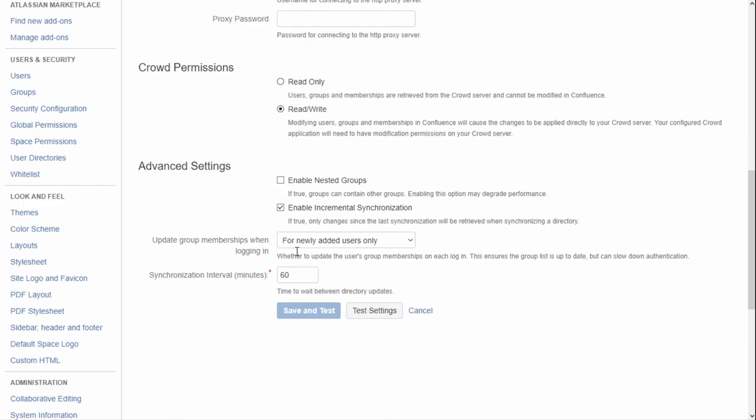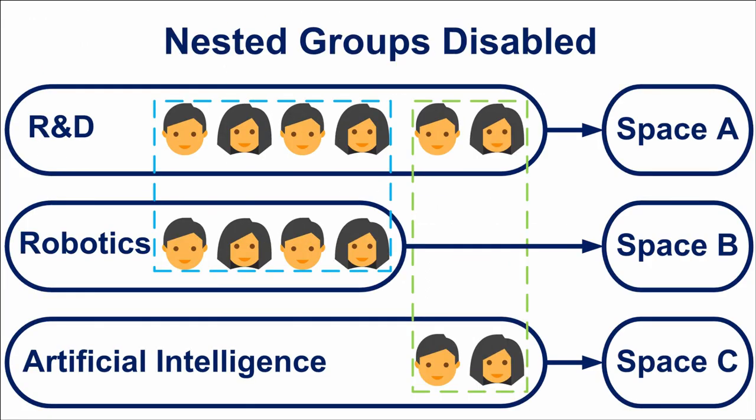Let's choose read-and-write for our example. The next interesting setting is nested groups. Imagine you have an R&D department with two teams — Robotics and Artificial Intelligence. Each team has its specific permissions for its own space and also shared permissions for the common areas of the entire department. The standard solution is to create groups R&D, Robotics, and Artificial Intelligence, add all employees to R&D, and manually add them to the team groups. But you need to constantly synchronize these groups so each employee belongs to at least two groups.